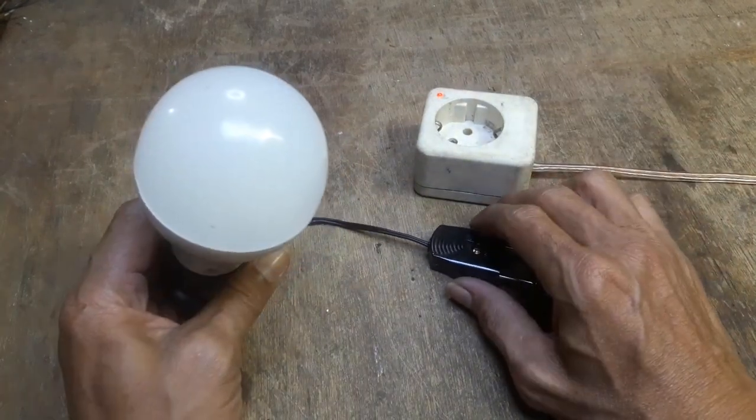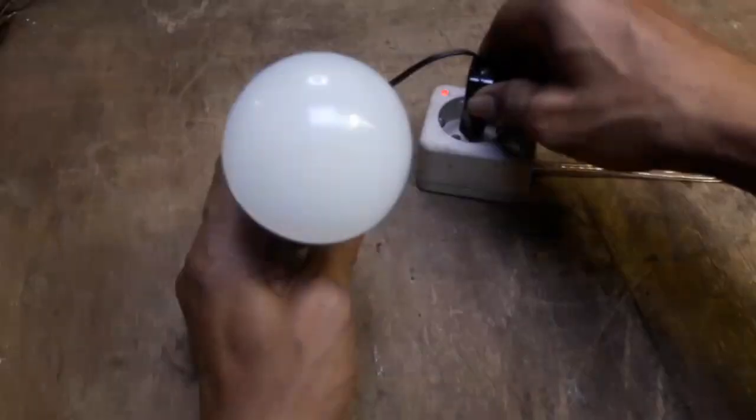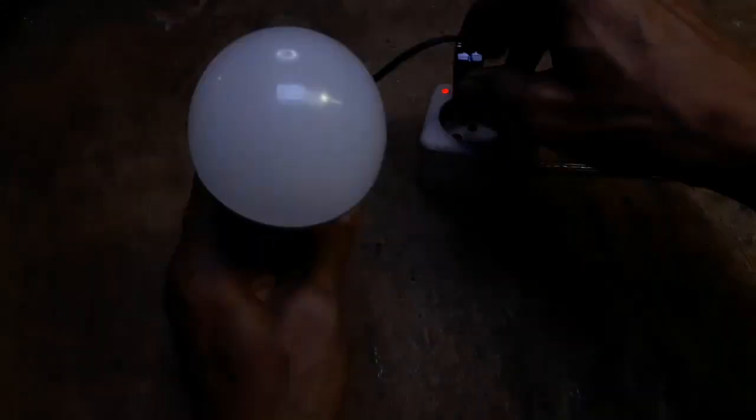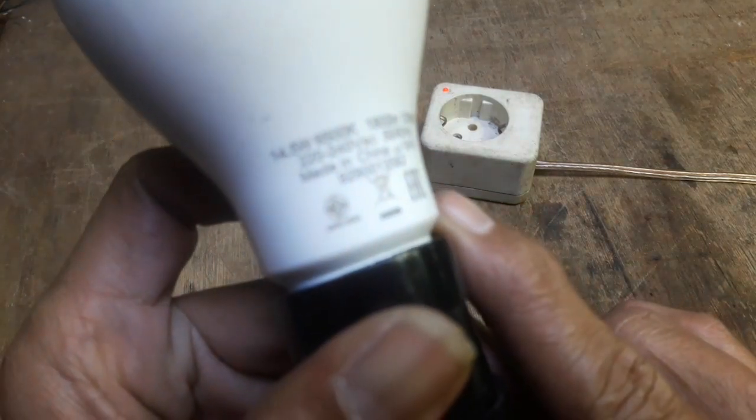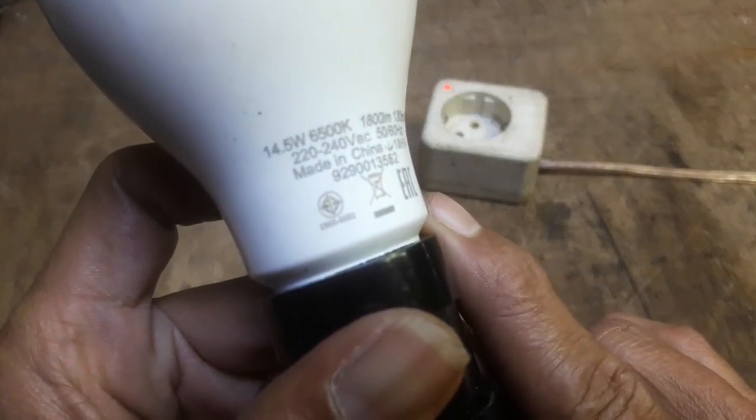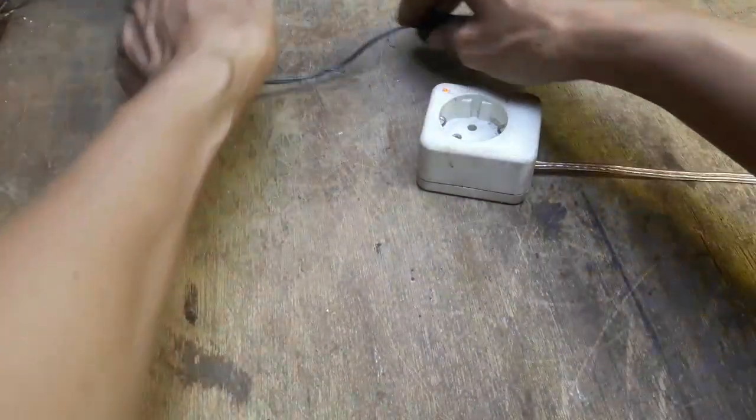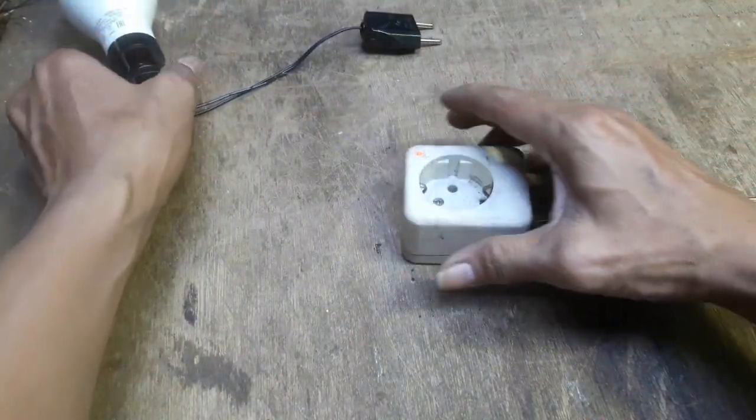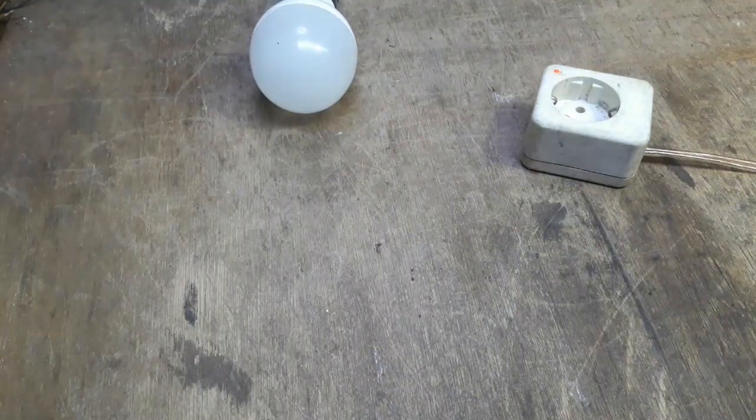Caranya, kita coba dulu. Ini posisi masih manual, belum otomatis. Kebetulan yang saya gunakan adalah 15,5 Watt, jenis Philips. Langkah apa sih yang dibutuhkan untuk membuat lampu LED ini menjadi otomatis?